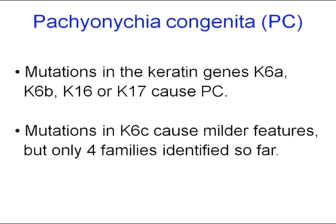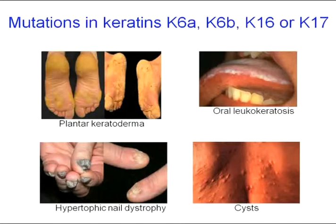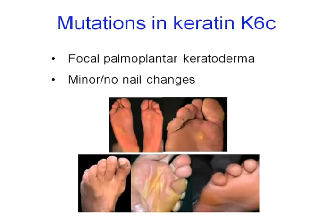So far we've only found mutations in three families, and another group has identified a fourth family. In these families, it appears that clinically the condition looks slightly milder, but the patients still suffer from severe pain in the feet. The numbers are very small so far, so we expect there may be more families with mutations in keratin 6C. These clinical pictures are familiar to you — mutations in 6A, 6B, 16, or 17 — in comparison to those with mutations in keratin 6C, which appear milder but still have pain associated with the keratoderma.